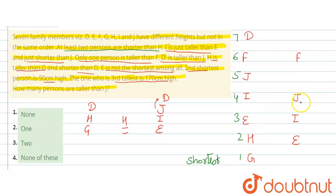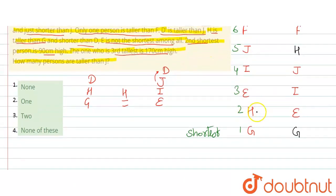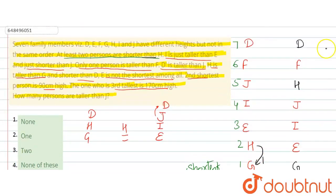Is case mein dekhte hain, yahan par J se upar D aana chahiye aur yahan par J se upar D aa jayega and H se niche G to yahan par H aa jayega and yahan par G and yahan par D aa jayega. Lekin yahan par yeh statement wrong ho gayi ki at least 2 log H se chote hone chahiye but is case mein H se keval 1 person shorter hai. Isliye yeh wala case aapka wrong ho gaya.